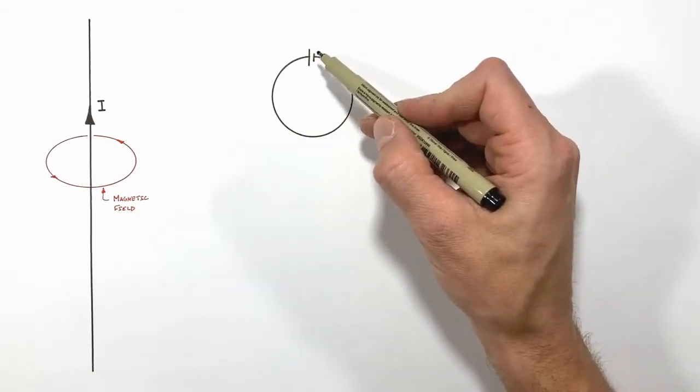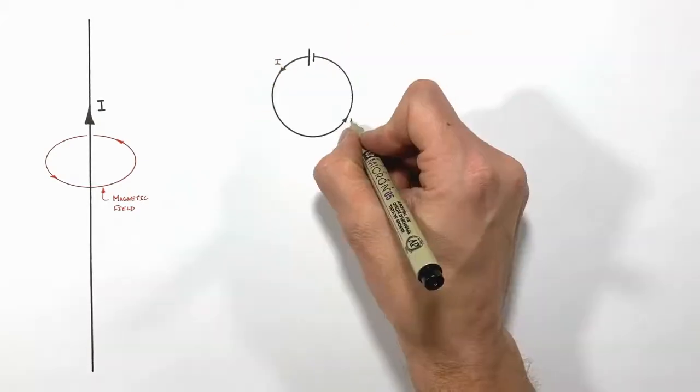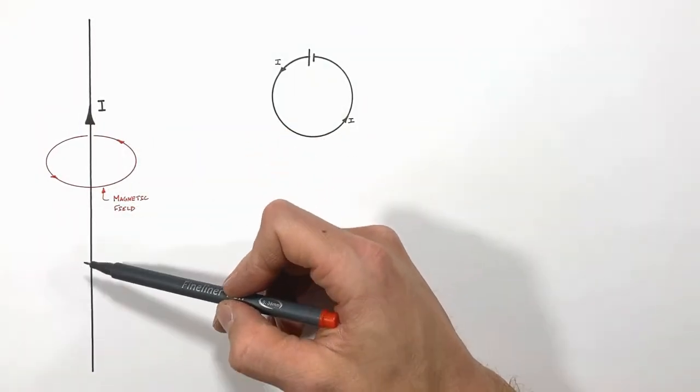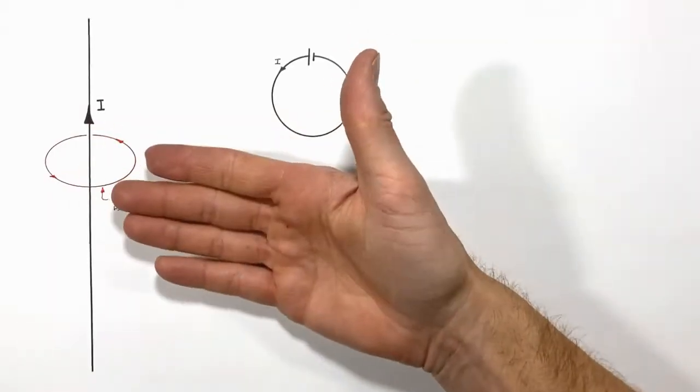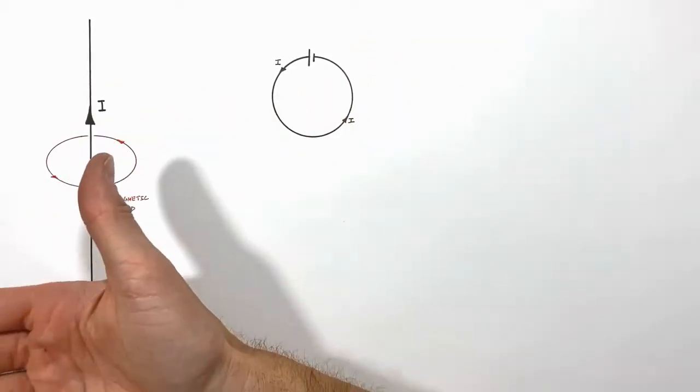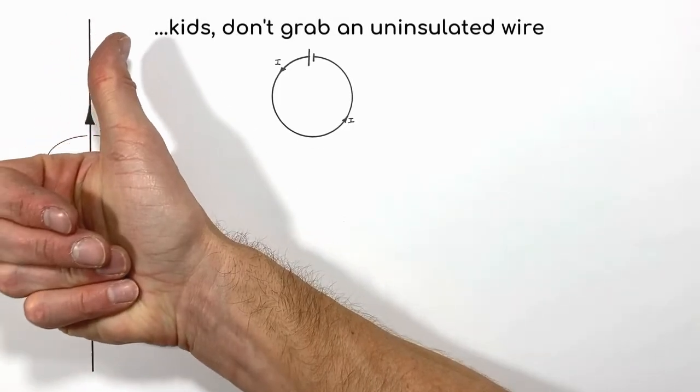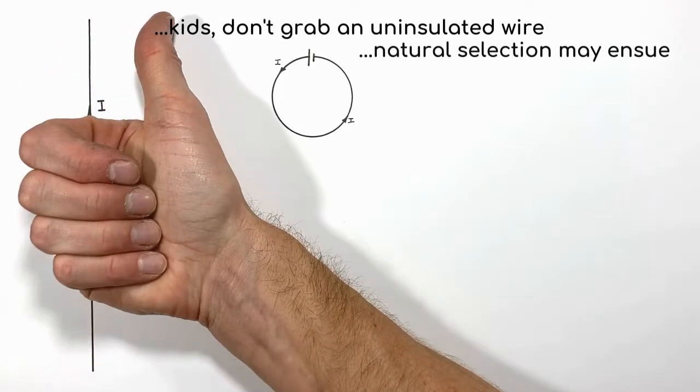You remember we determine the direction of the magnetic field around a wire using the right-hand rule. According to the right-hand rule, if we grab a wire that was carrying current and point our thumb in the direction of the current, our fingers would wrap in the direction of the magnetic field.